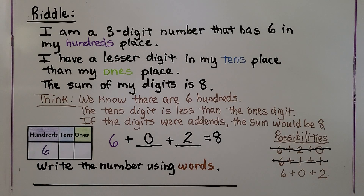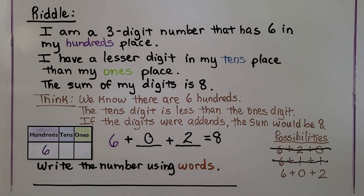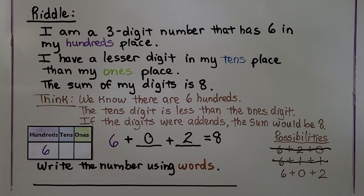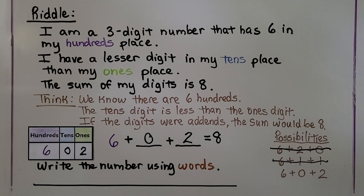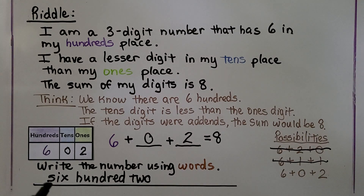That was a little tricky because you wouldn't normally think of adding up the digits to get a sum. We need to write the number using words — the number is six hundred two. There are no tens, so we just write 'six hundred two.'